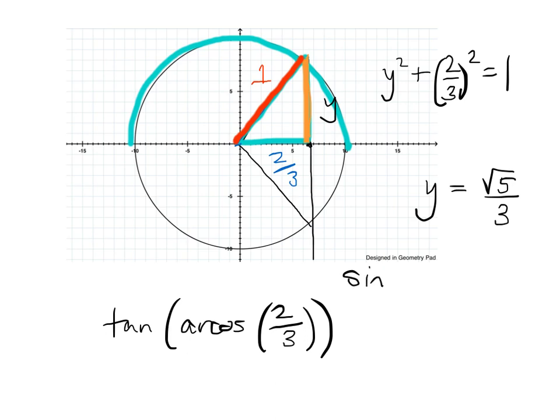is that sine of arc cosine of two-thirds. That's what this is. That's what we just figured out. Okay. Right? Now, like you said, if I want to figure out tangent,